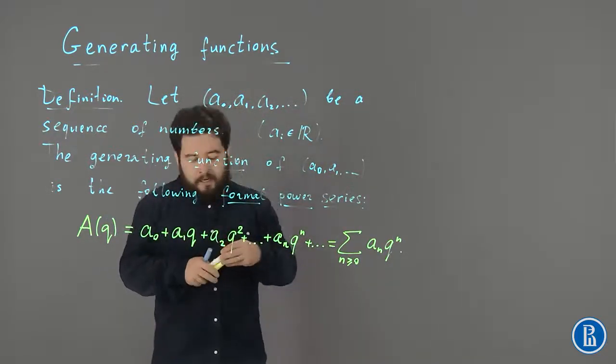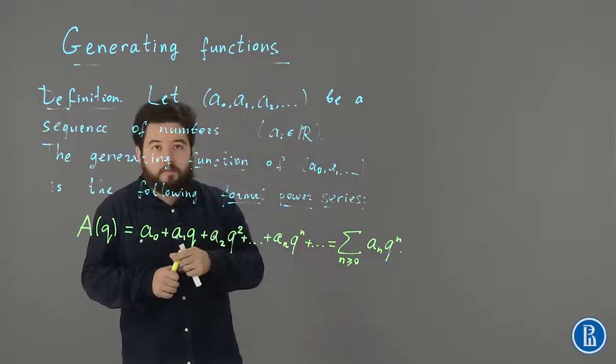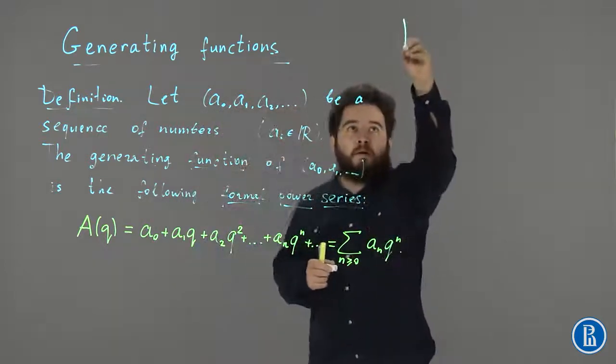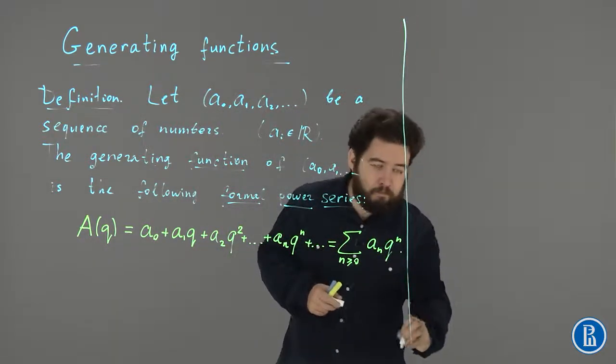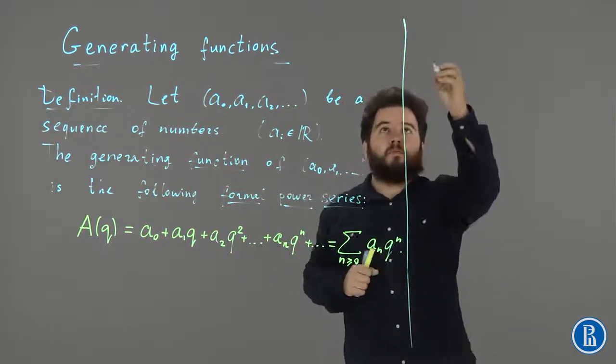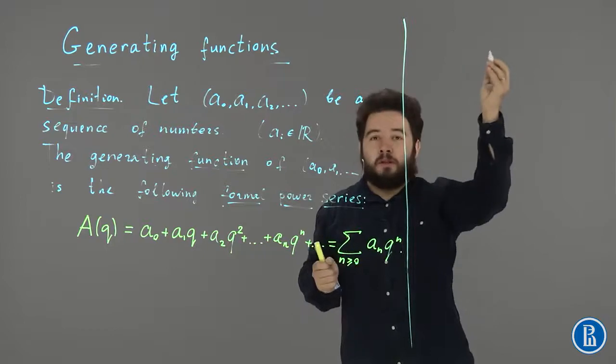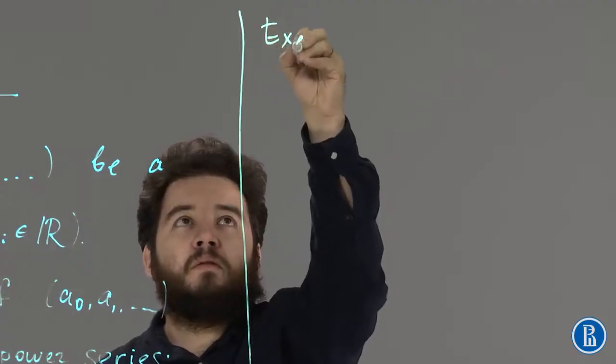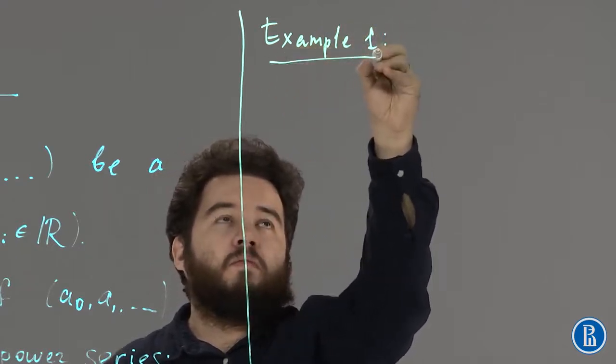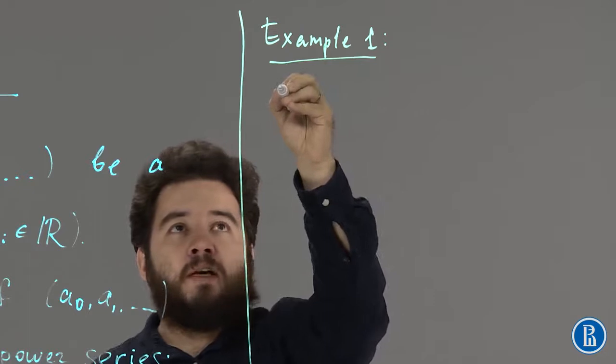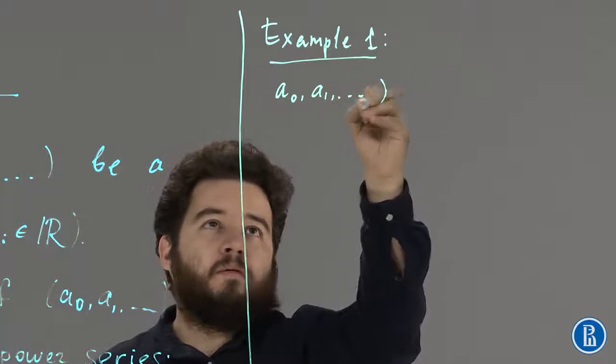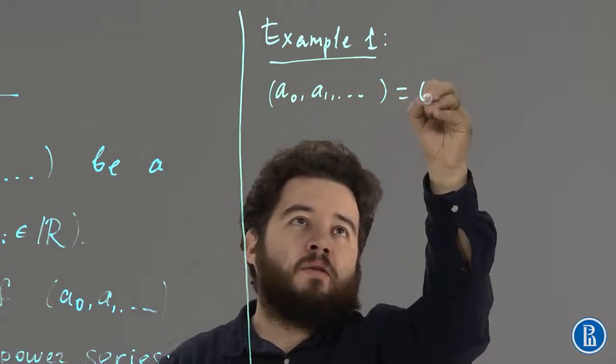So, let us first consider some easy examples. Let us start with a not very interesting sequence, which consists of equal numbers of just ones. Example 1. Suppose that A0, A1, etc. is just the sequence of ones.